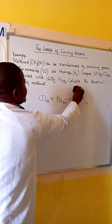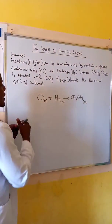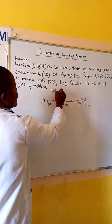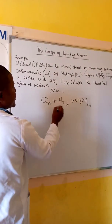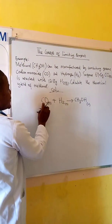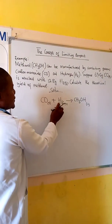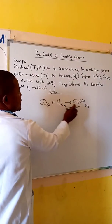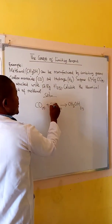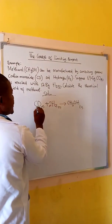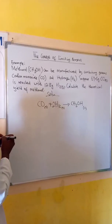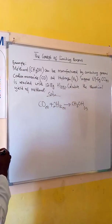The first thing we do is balance the equation. We count two hydrogens on the left and four on the right, so we place a coefficient of two here. The equation is now balanced.